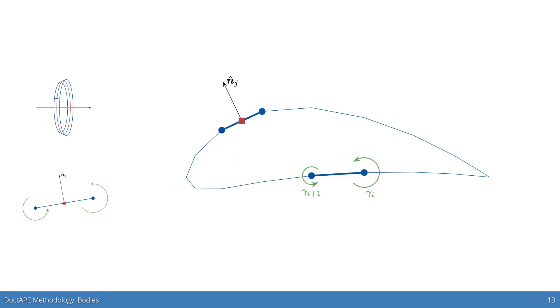The panel method is implemented in a typical manner, where we solve for the strength of the vortex strength distributions along each panel, so the green gammas here, given a boundary condition of no flow normal to the body surface and forced at control points distributed along the surface, such as the point in red shown here.